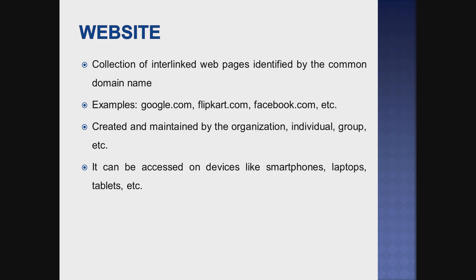Next one is website. A website is a collection of interlinked web pages identified by a common domain name. For example, google.com is a website. It is a collection of interlinked web pages identified through a common name. There are many web pages connected by a domain name.